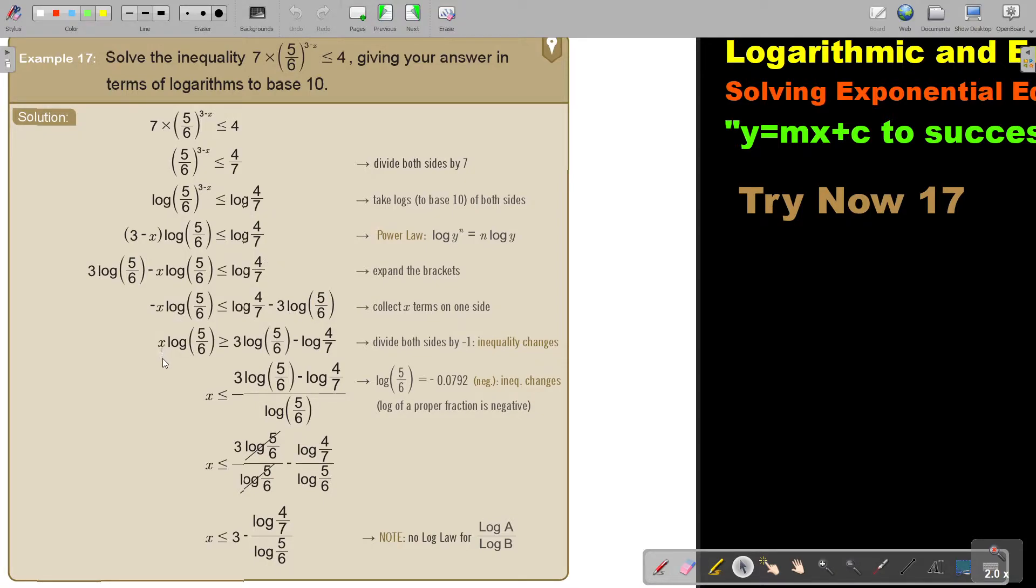Now because I'm dividing by negative, as soon as you divide, the inequality sign swaps. This one becomes positive, that's why I write it in front, and this one becomes negative. So I just swap these two. Then I divide by log 5 over 6. I can divide it by that one and that term. I break it up. So this cancels, so that I have 3 minus log 4 over 7, log 5 over 6. Now there's not a law that you can cancel this out, so that is your final answer.